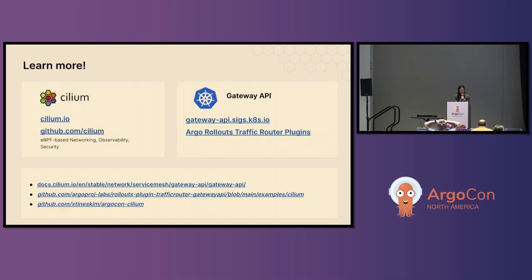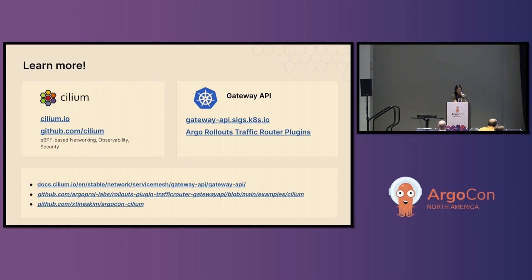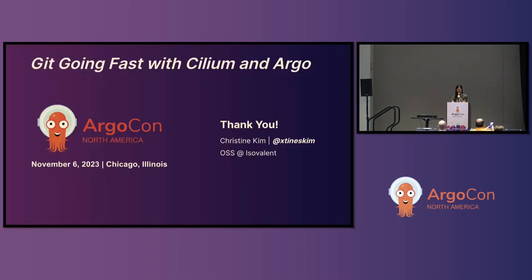I have links at the end and these slides are uploaded, so you don't have to take pictures. I would say try out Cilium — it's so much more than just a CNI, it's also a service mesh and it's really powerful. Check out eBPF as well if that's tickling your interest, and also the Gateway API, a project I love dearly. Please get involved, give feedback, and with that, thank you so much.